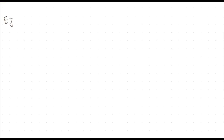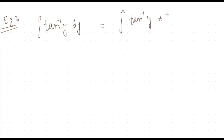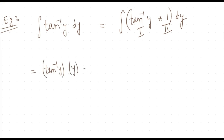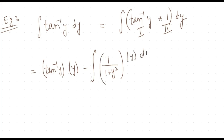Let's take another example: integrate tan⁻¹(y) with respect to y. Again there is no second function, so we take it as tan⁻¹(y)·1·dy. By ILATE, inverse comes first at the top of the list, so tan⁻¹(y) is the first term and 1 is the second. The integral becomes: first term tan⁻¹(y) as it is, times y, minus the integral of the differentiation of the first term — which is 1/(1 + y²) — times y, all integrated with respect to y. This gives y·tan⁻¹(y) minus ∫y/(1 + y²) dy.